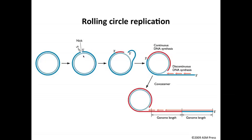Here is the circular double-stranded DNA on the left. First, a nick is introduced into the DNA by an endonuclease, and that nick gives you a free 3' hydroxyl. You don't have to make a bubble or denature the two strands — the nick at an origin of replication gives you the 3' hydroxyl. The DNA polymerase can come in, use this 3' hydroxyl as a primer, and begin synthesizing the complementary strand, shown in red here.